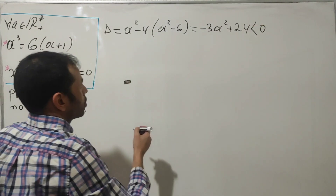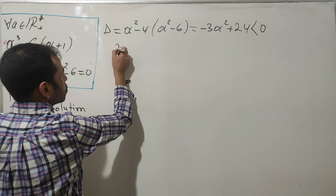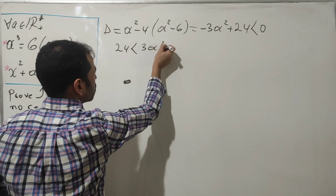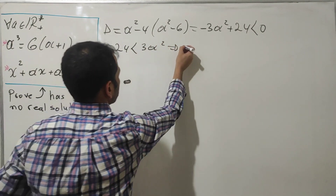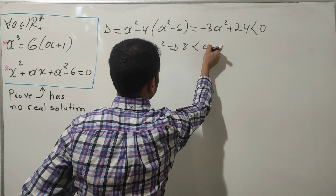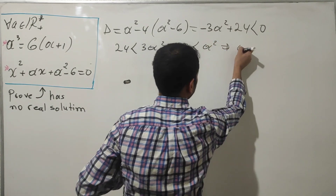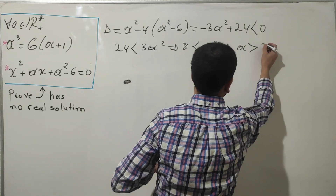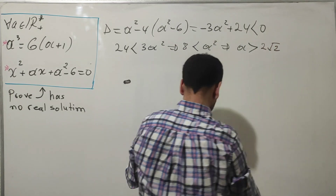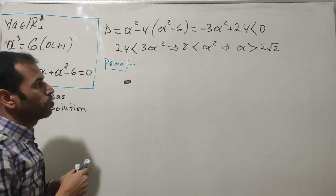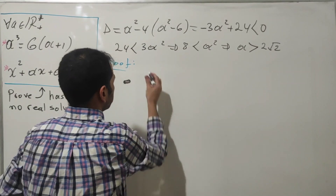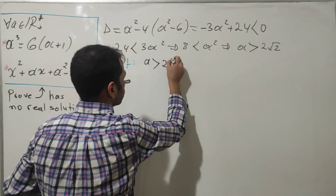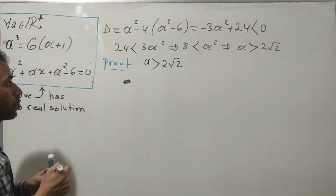Simplifying further: Δ < 0 means 24 < 3a², which implies 8 < a², in other words a must be strictly greater than 2√2. So we need to prove that a is strictly greater than 2√2. If we prove this, we are done.